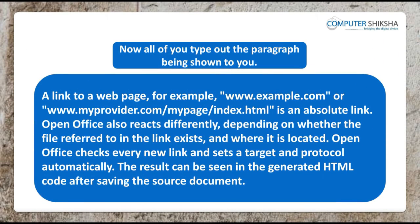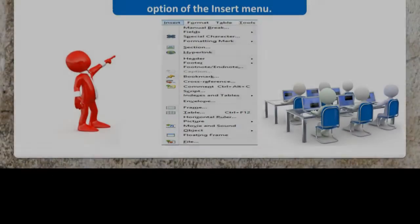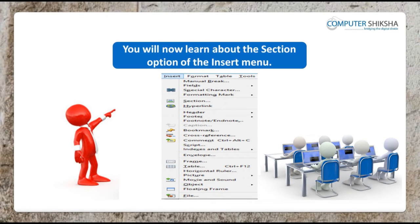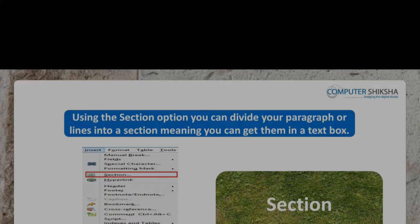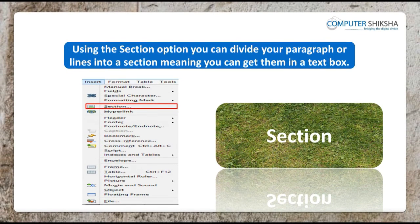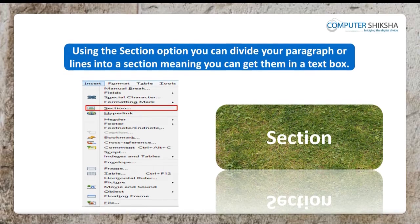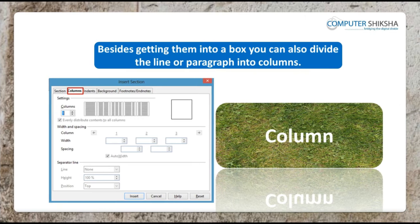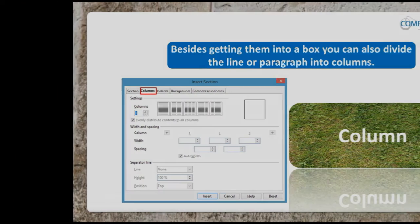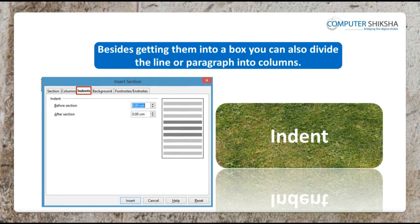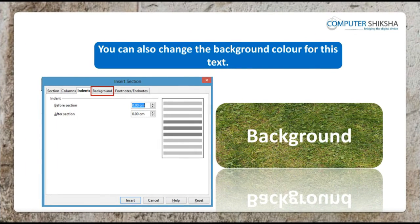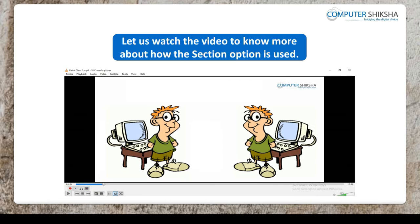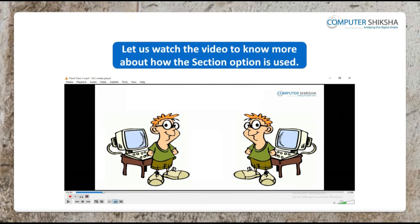Now, all of you type out the paragraph being shown to you. You will now learn about the Section option of the Insert Menu. Using the Section option, you can divide your paragraph or lines into a section, meaning you can get them in a text box. Besides getting them into a box, you can also divide the line or paragraph into columns, and you can also apply an indent or margin. You can also change the background color for this text.